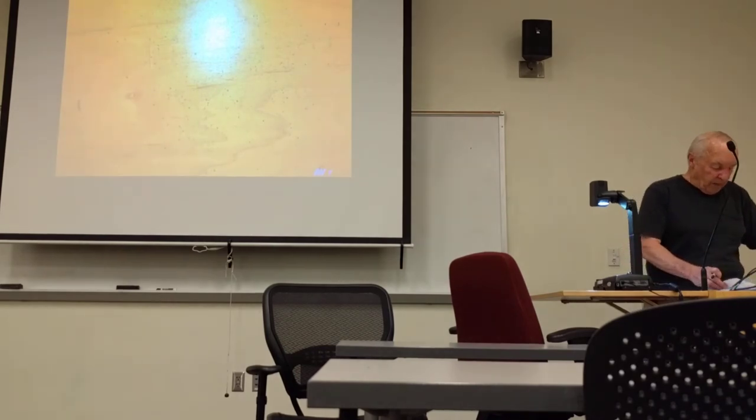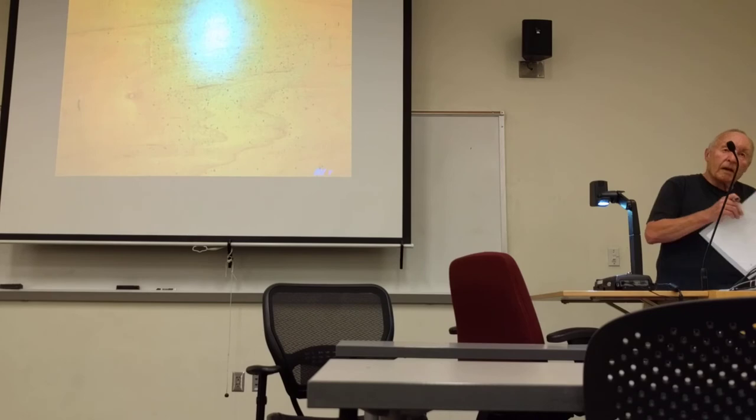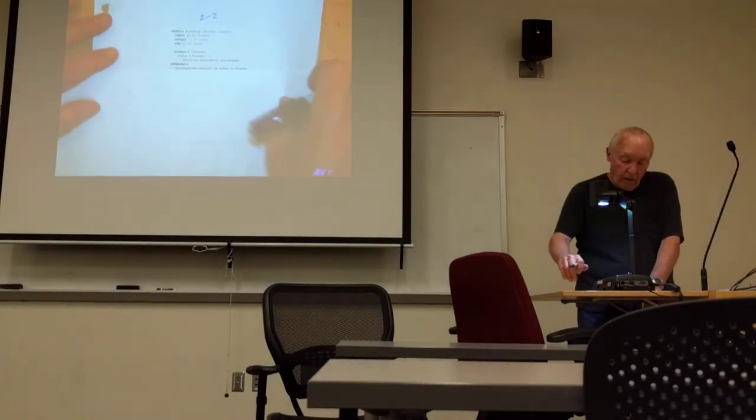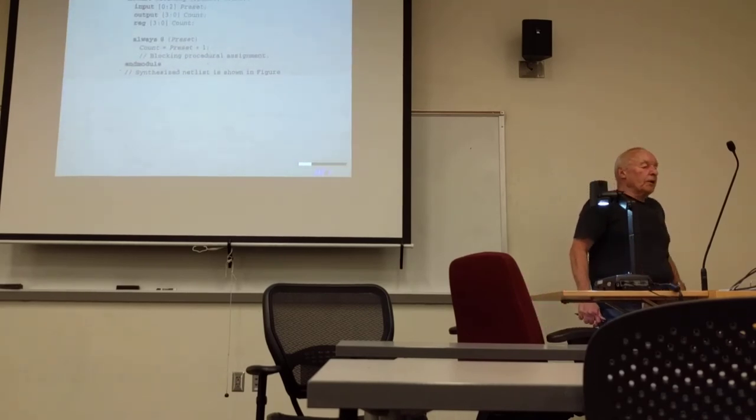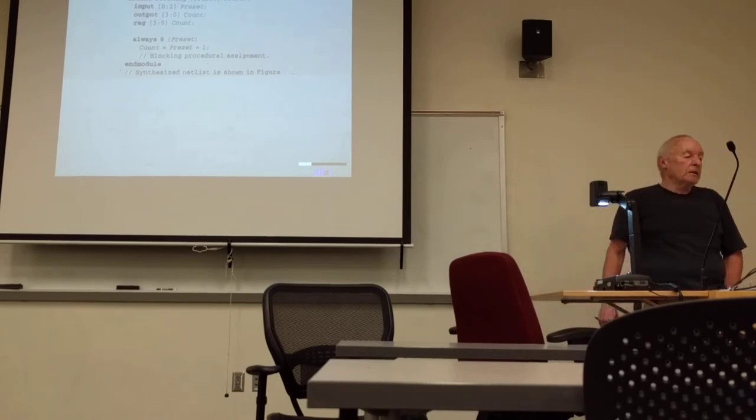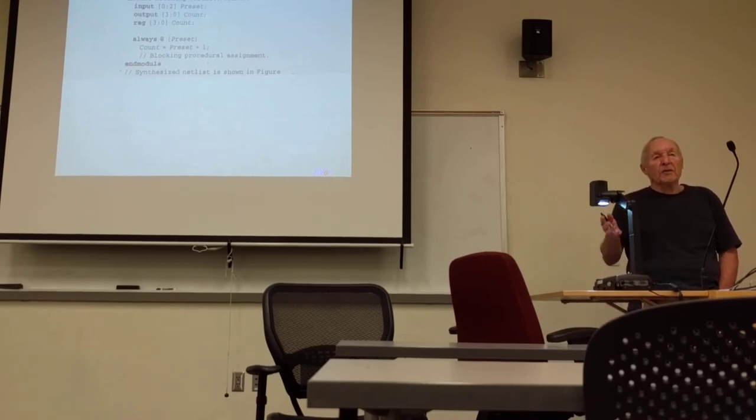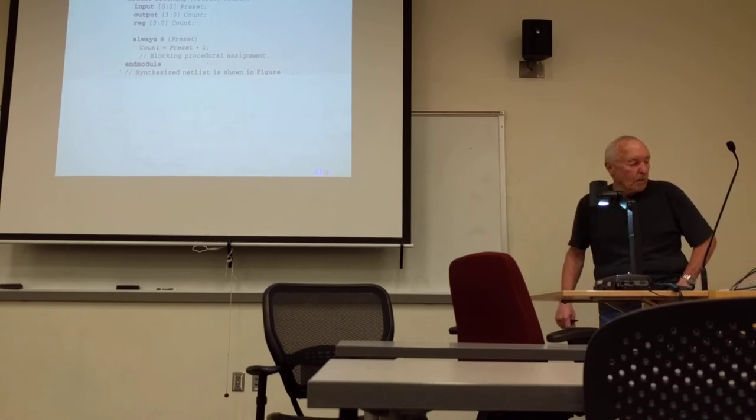First thing I want to do is look at a blocking assignment. And I want to make a comment here, even though it looks like a counter, this is not a counter circuit. So if you look at the port list, there are two signals, preset and count. Preset is three bits and count is four bits. And then always, at any change of preset, count is equal to the preset value plus one. So effectively, this circuit is just an incrementer, despite the variable names that were used. It just takes whatever the input is and increments it by one.